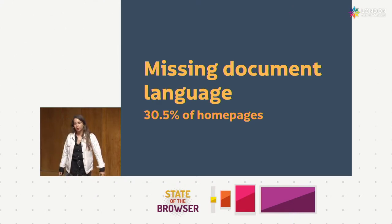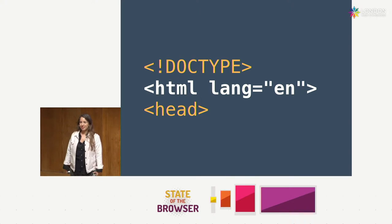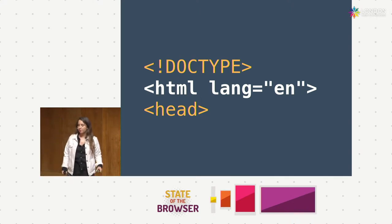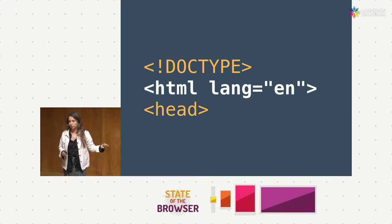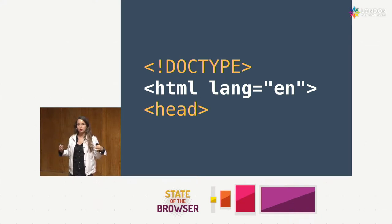Missing document language: if you just put the lang attribute in the top of your HTML, you're pretty much sorted. If it's not English, you can use the tag for any other language. Many English speakers are prone to forgetting that English is not the default. This also helps assistive technology with pronunciation when reading content aloud — the pronunciation or meaning of a word can change significantly depending on the language, like 'attention' in English versus French.